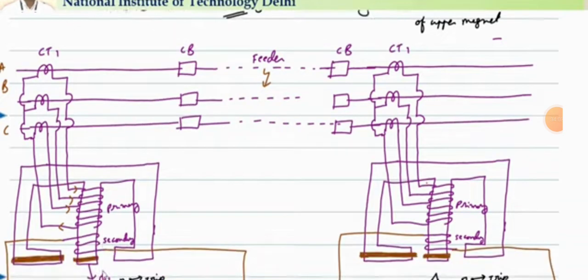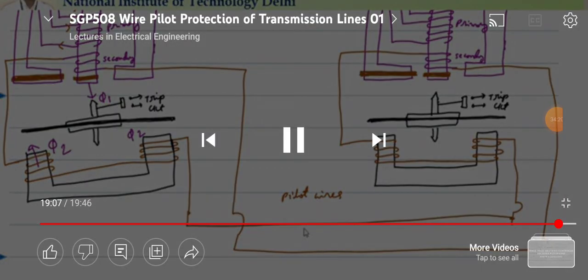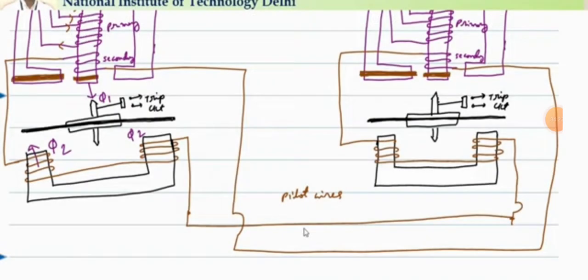This method is used for pilot wire loop resistance of up to 800 ohms. Above that, because of the increase in resistance value, the circulating currents decrease drastically and the torque is not sufficient to operate the relay. That is why this is used up to 800 ohms only.